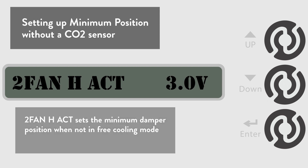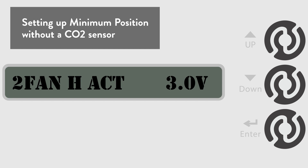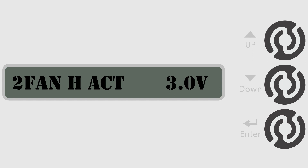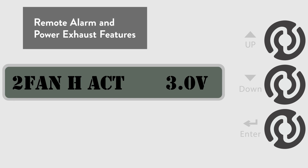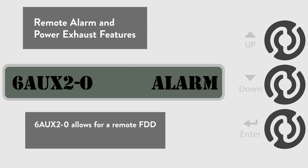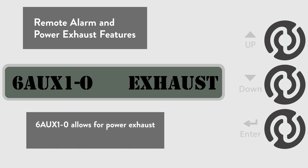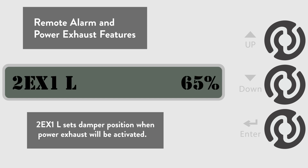The last two items we are going to discuss are for informational purposes. We are going to look at the settings for power exhaust activation and alarms for fault detection. Even if you do not use these features, you can leave the settings at the default. Scroll down to the 6 AUX2-0 menu. The default is set to alarm to allow a signal to be sent to a remote light or thermostat signifying that a fault has been detected on the economizer. The remote alarm feature is required by many building codes including California's Title 24. Our last example will be the 6 AUX1-0 menu. The default is set for exhaust for use with a power exhaust. To change the activation setpoint, go to the 2-EX1-L menu, where the default is set for the power exhaust to kick on when the outside air damper is open to 65%. But for this example, we are going to change it to 75%.